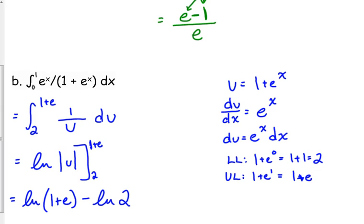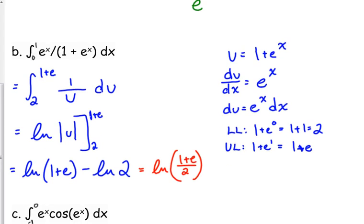So, we've got the natural log of 1 plus e minus the natural log of 2. The only thing that they may do to this is combine, and they probably will, they'll combine those natural logs. When you're subtracting natural logs, it becomes a quotient. I'm glad that y'all are finally remembering that. So, I know it doesn't look pretty, but that is the answer.